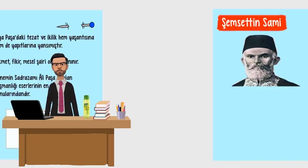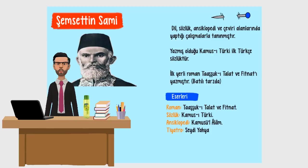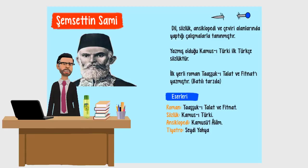Sıradaki yazarımız Şemsettin Sami. Dil, sözlük, ansiklopedi ve çeviri alanlarında yaptığı çalışmalarla tanınmıştır. Yazmış olduğu Kamus-ı Türki, Türkiye'deki ilk Türkçe sözlüktür. İlk ve yerli roman Taaşşuk-ı Talat ve Fitnat'ı yazmıştır.